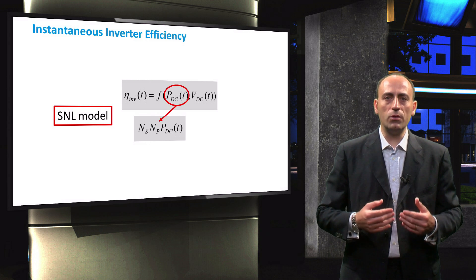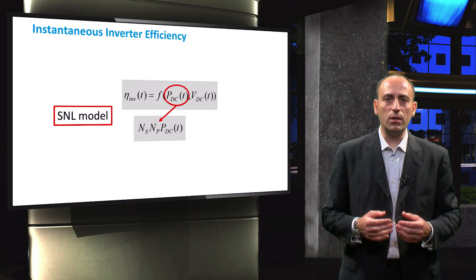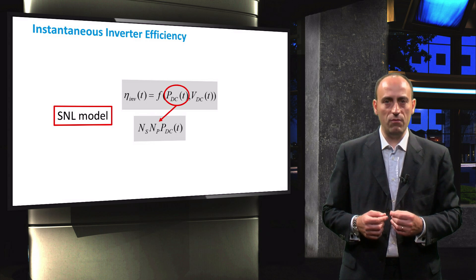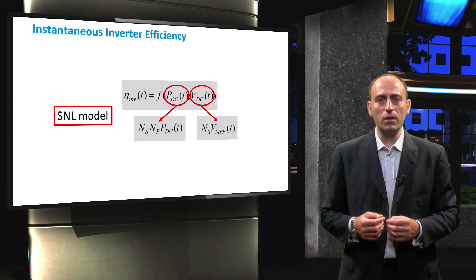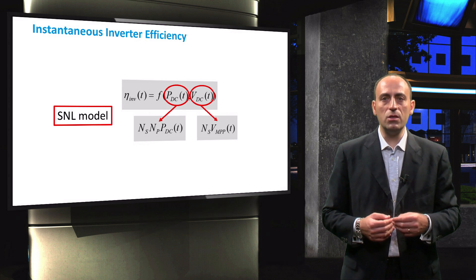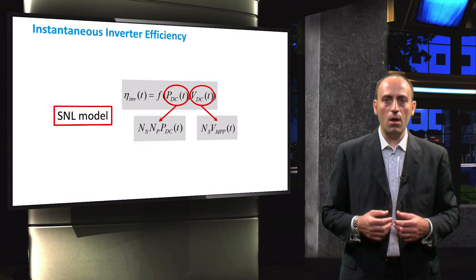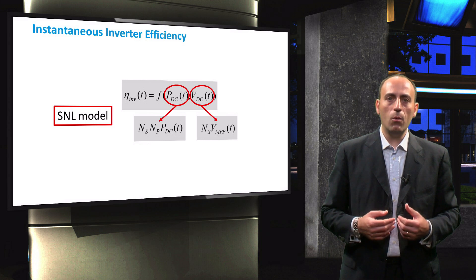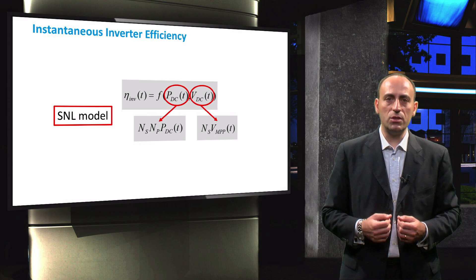The DC power is the product of total number of modules and the power generated by one PV module. The DC voltage is the product of maximum power point voltage of a PV module and the number of series connected PV modules. Through the SNL model, we obtain the instantaneous efficiency of the inverter.